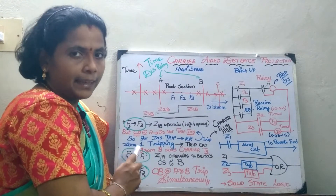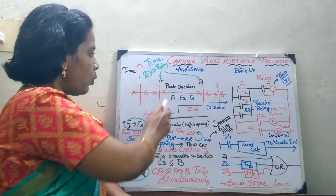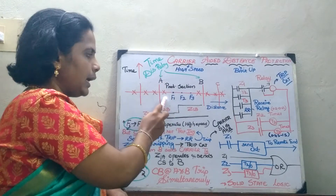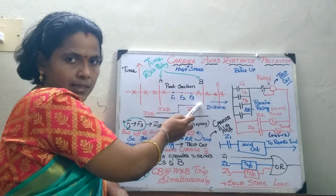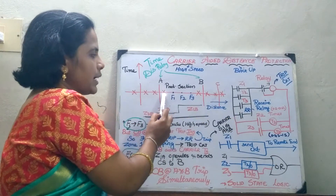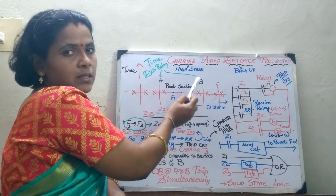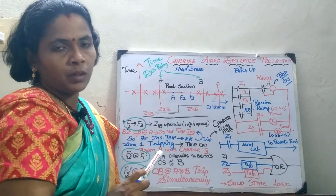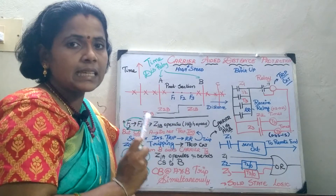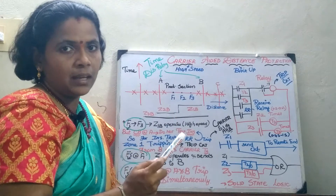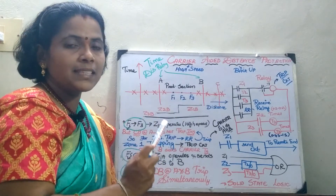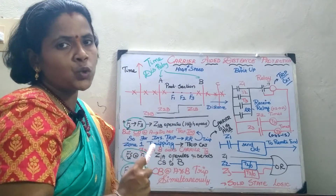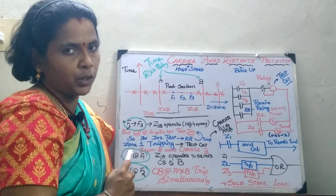We will now consider a fault at F1. If a fault occurs at F1, immediately the relay at A will trip, but the relay at B will not trip instantaneously. So the receive relay will send a carrier signal from A to B, and it will operate. Whenever this signal is sent and its presence aids the tripping of the relay, it is called the transfer tripping scheme — as opposed to the blocking scheme seen in the previous circuit.